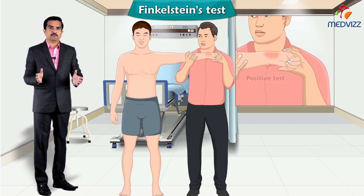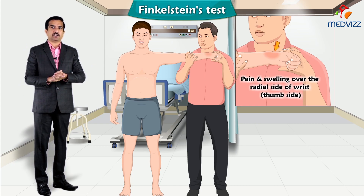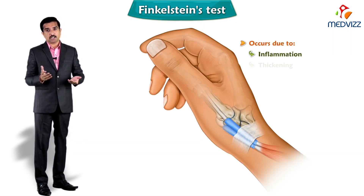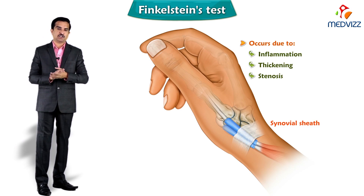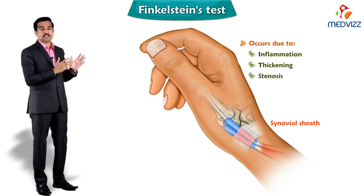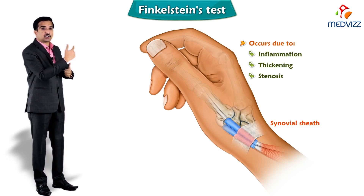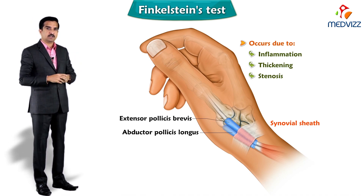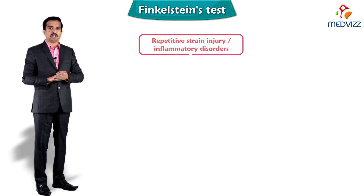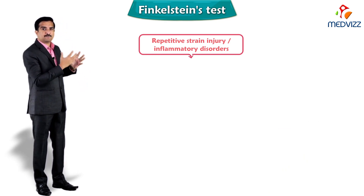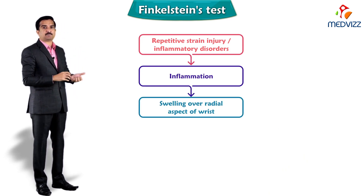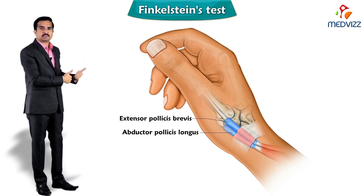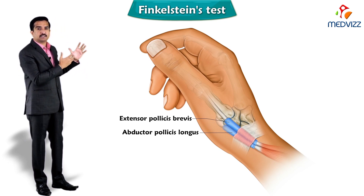With DeQuervain syndrome, there will be pain and swelling over the radial side of the wrist, that is the thumb side. It mainly occurs due to inflammation, thickening, and stenosis of the synovial sheath — the tunnel that surrounds the two tendons controlling thumb movement: the abductor pollicis longus and extensor pollicis brevis. This narrows the space through which these tendons pass on their way to the hand.